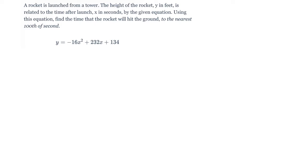All right, so this problem says a rocket is launched from a tower. The height of the rocket, y in feet, is related to the time after launch x in seconds by the given equation. Using this equation, find the time that the rocket will hit the ground to the nearest hundredth of a second.